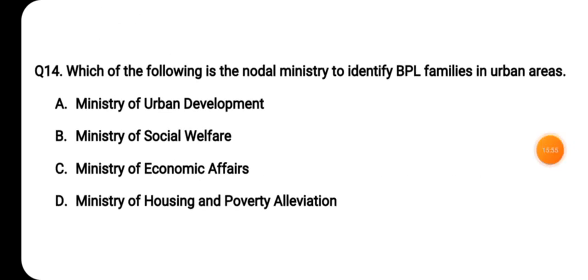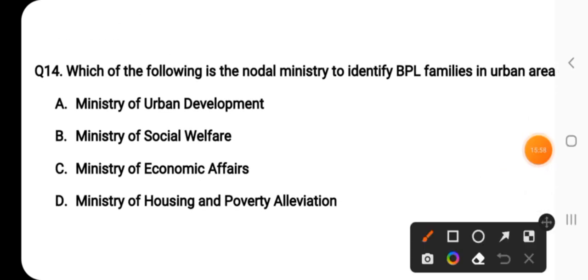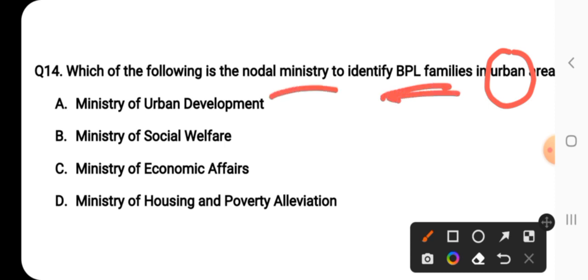Question number fourteen: which is the nodal ministry to identify BPL families in urban areas? The answer is option D — Ministry of Housing and Poverty Alleviation. The Ministry of Housing and Poverty Alleviation is responsible for identifying BPL families in urban areas.